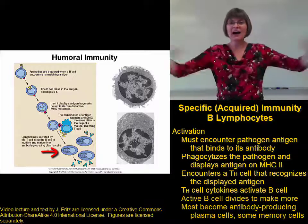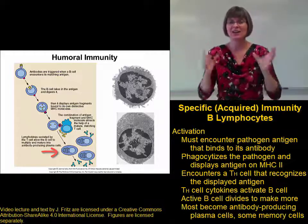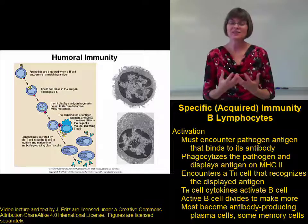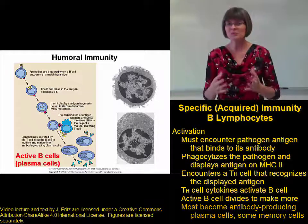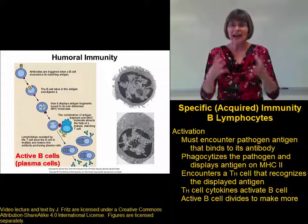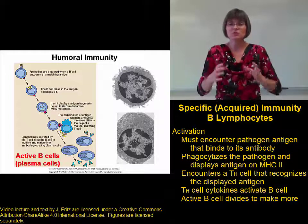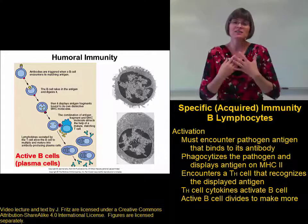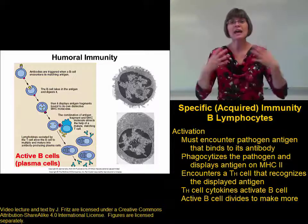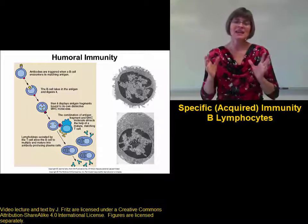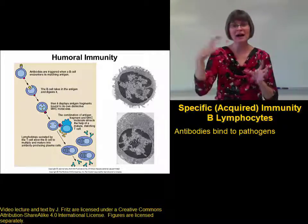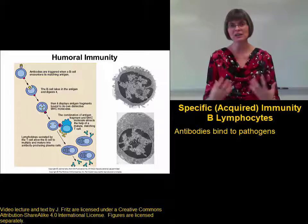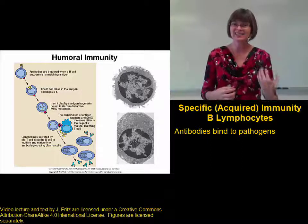Once the B cell is activated, it divides to make a whole army of B cells that recognize that particular pathogen. Most of these B cells then become special cells called plasma cells. Plasma cells are like antibody factories. These activated B cells produce tons of antibodies and dump them out into the body's fluids, so these antibodies are now circulating through the lymph, the tissue fluid, and the blood. That's why B cells are so good at fighting pathogens found in the humors — in the body fluids, not inside of cells.